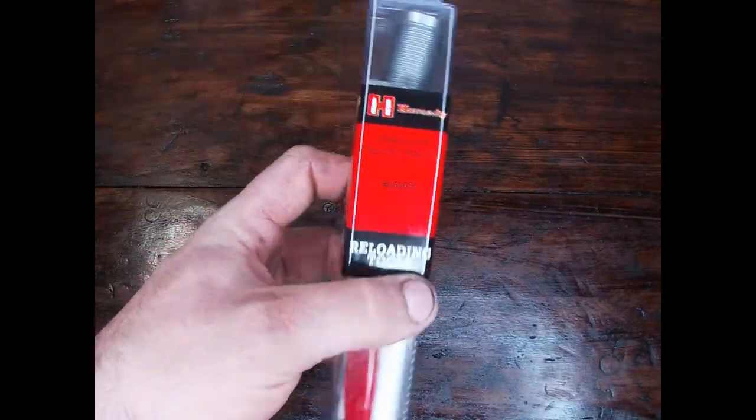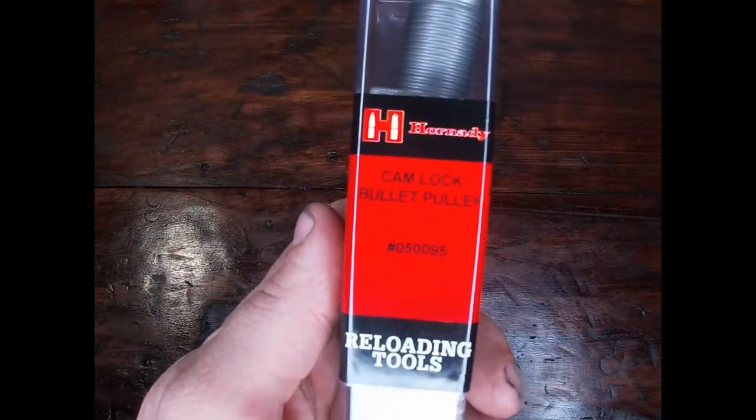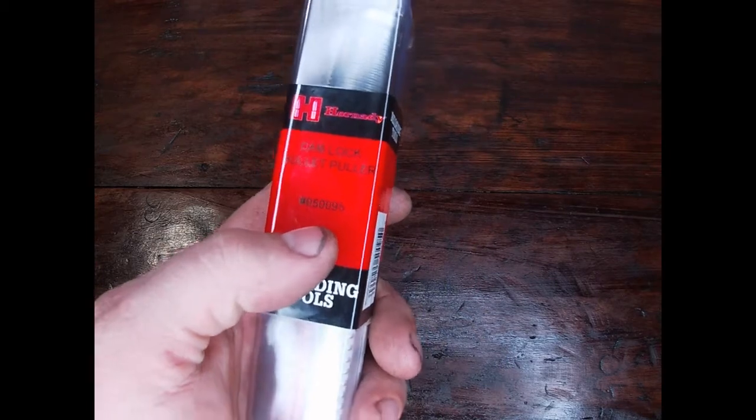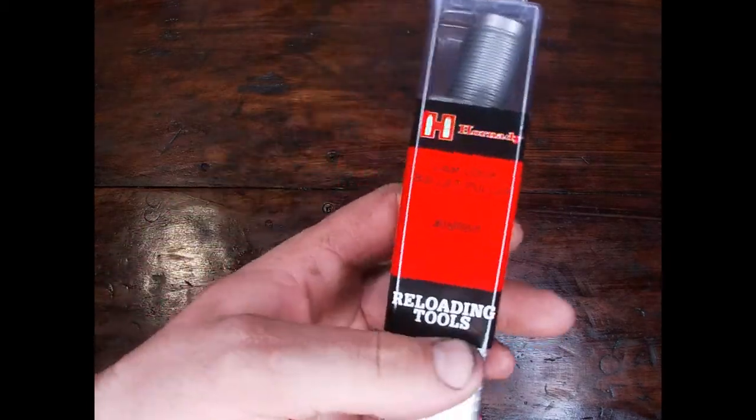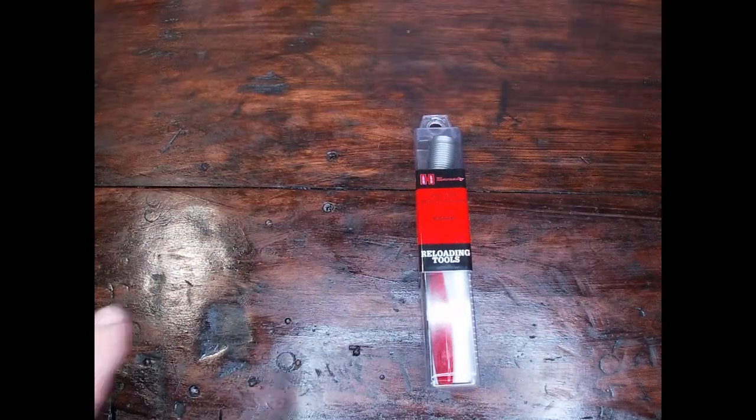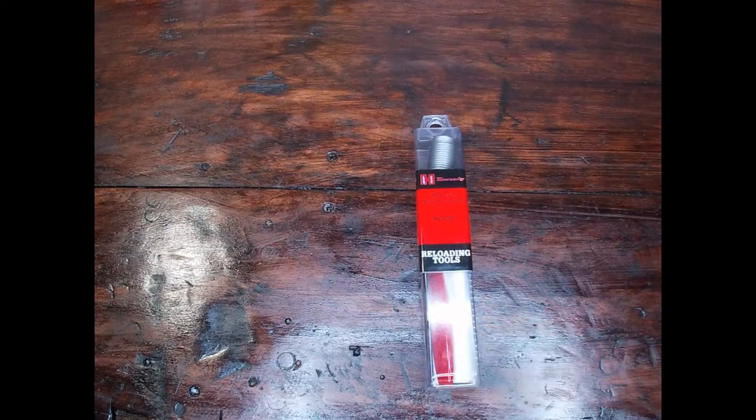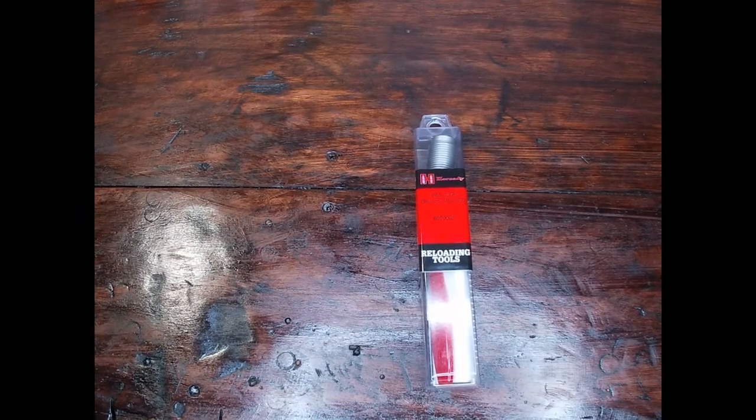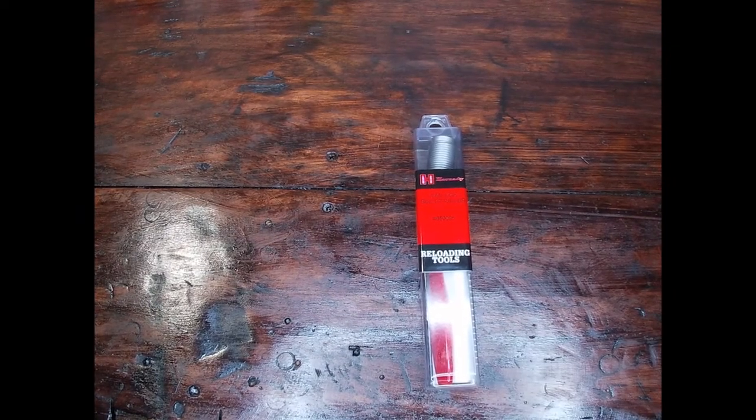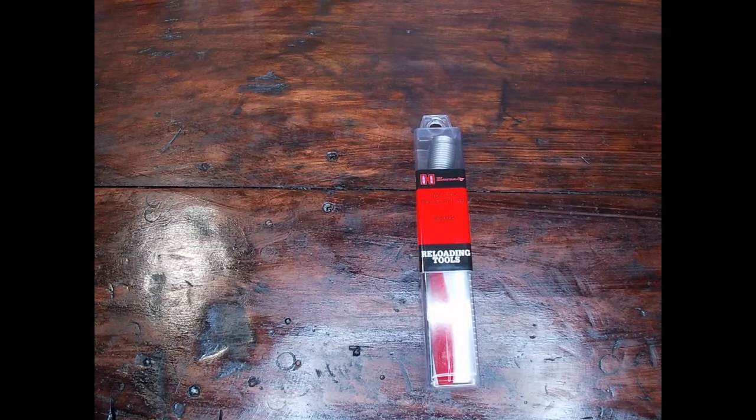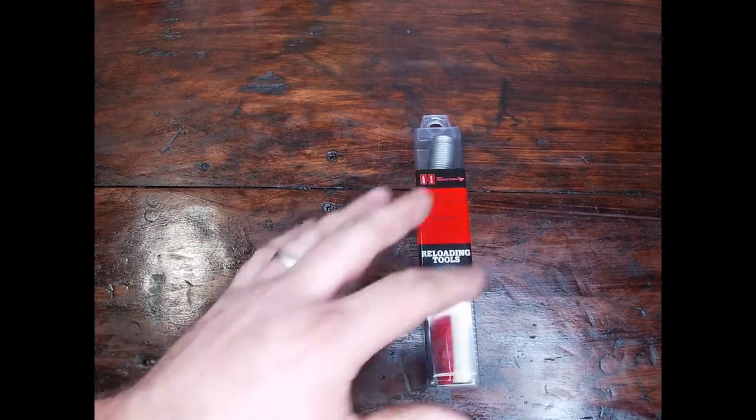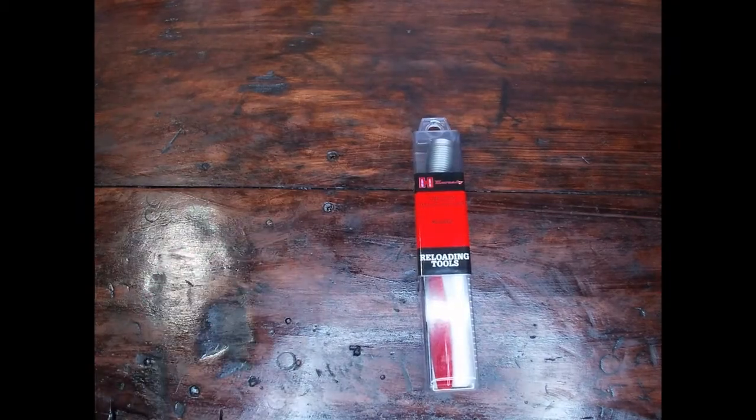Like I said guys in the intro, this is the Camlock Bullet Puller, item 050095. This is for your reloading. You're going to see me mount this on my Dillon 550, which is over here to my left. You're going to see that here in a few in the video. I'm going to show you how to set it up, how it goes. There's only one downfall to this guys, and I'm going to tell you.